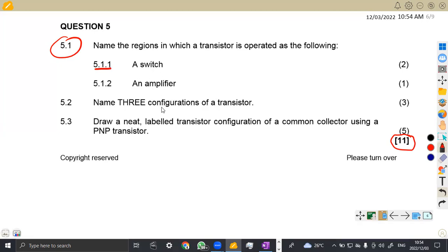5.1.1 when it operates as a switch. So when it operates as a switch, where is that part? That is the cutoff. Remember, guys, this is the cutoff region. And when it is an amplifier, that one is the saturation region. All right. So these are the two answers that we expected to have them.